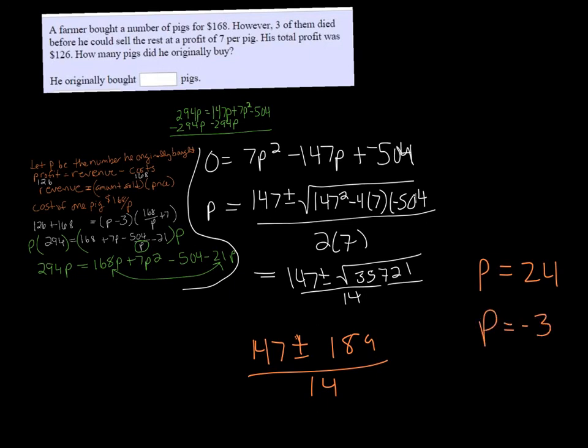So it doesn't make sense that he bought negative 3 pigs. It must be that he bought originally 24 pigs. And you can always plug it back into the scenario and check that it makes sense.